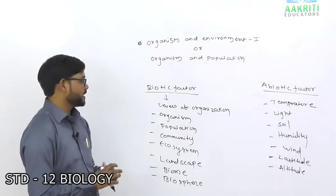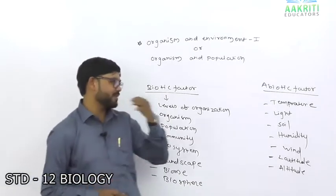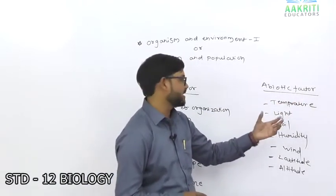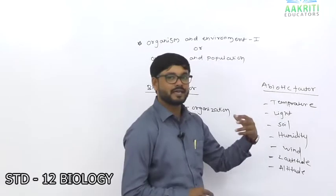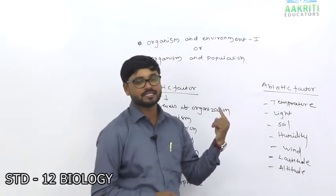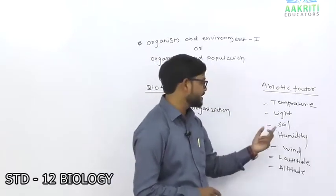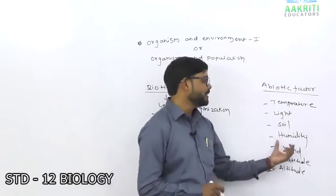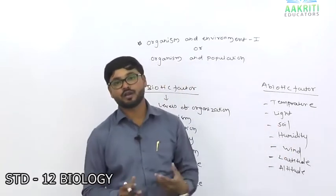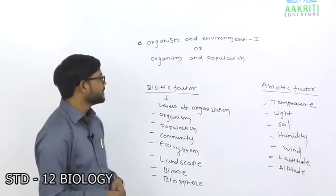About biotic factors: temperature and climatic conditions keep changing — temperature increases or decreases. Light plays an important role — photosynthesis uses light energy and converts it into chemical energy, which is very important for plants. Soil also has an important role, and humidity is an abiotic factor that interacts with organisms, along with wind, latitude, and altitude.